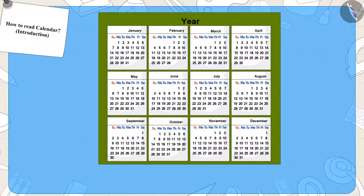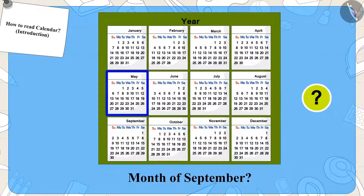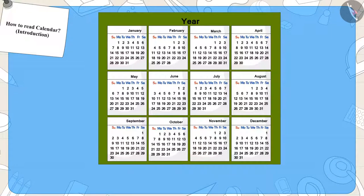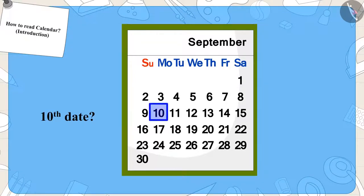First, we will find the month of September in the calendar. Can you find the month of September on this calendar? Well done, kids! You have found it absolutely right. Now, can you find the date 10 in here? That's great! You got the date right!